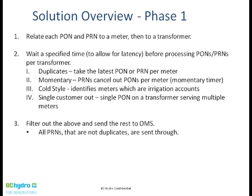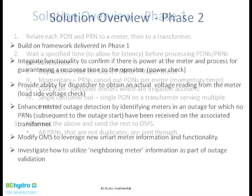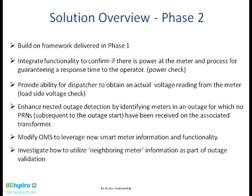We also single out customers where it's a single PON on a transformer serving multiple customers. If a transformer has eight, ten, or twelve customers and we only get one PON, that's unlikely to be a utility issue. Once we've done all that, we send those to the outage management system for presentation to the dispatcher. We do send all restoration notices because that helps with the restoration process.